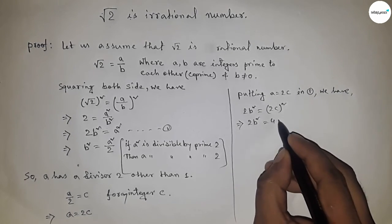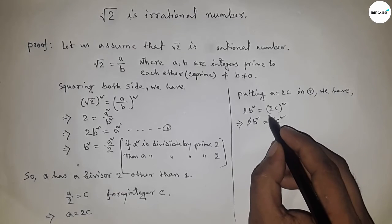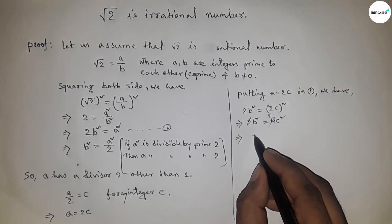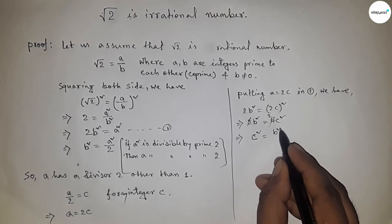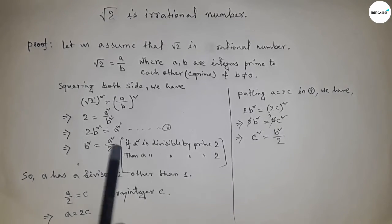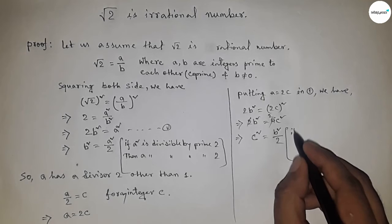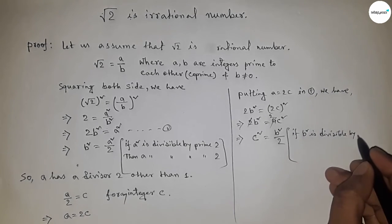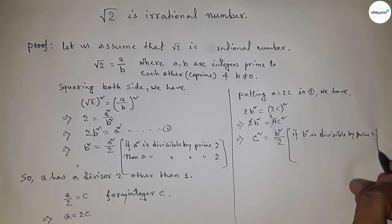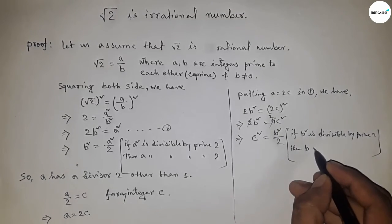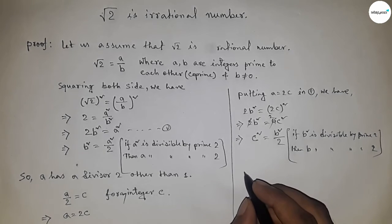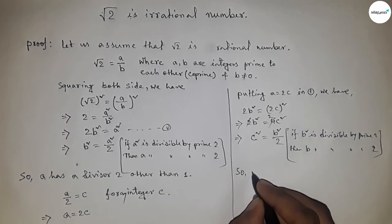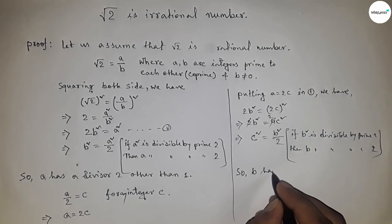Cancelling the common factor 2, we get b squared equals 2c squared, which means b squared is divisible by 2. Applying the same theorem, if b squared is divisible by the prime 2, then b is also divisible by 2. So b has a divisor 2 other than 1.